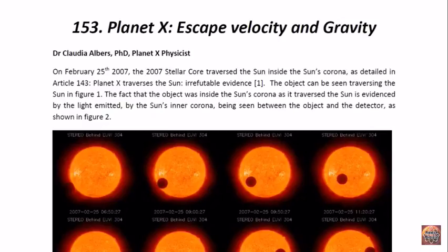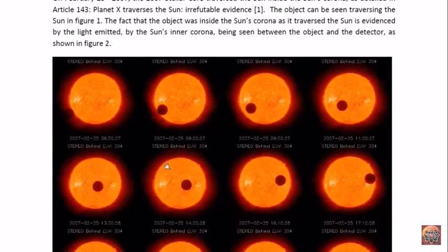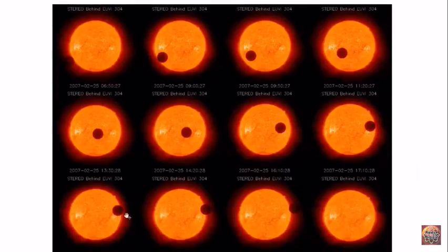Now the object can be seen traversing the sun in figure 1, as we can see here, there it is about to traverse, and there it goes, keeps on going, and there it leaves.